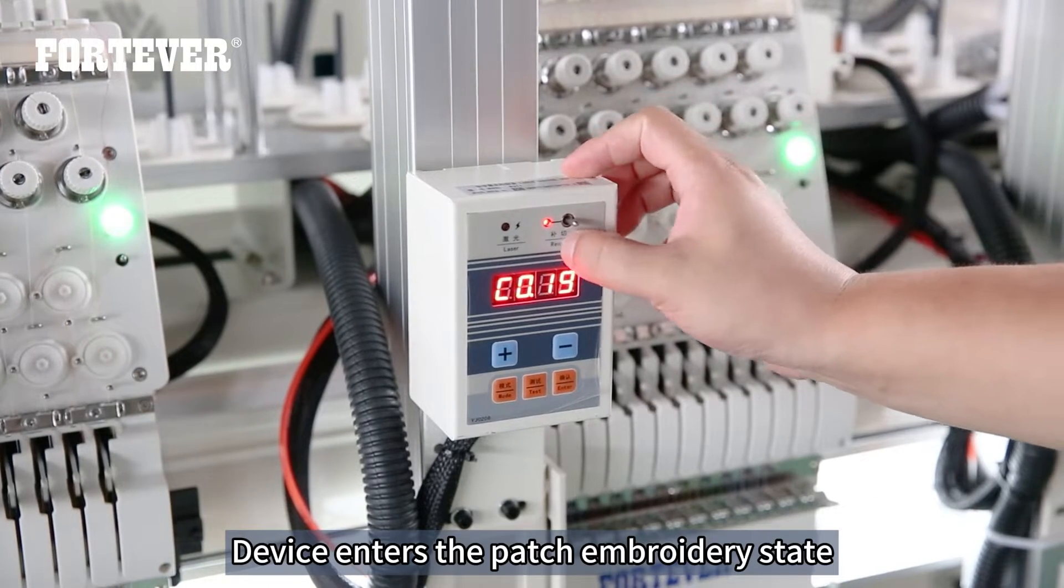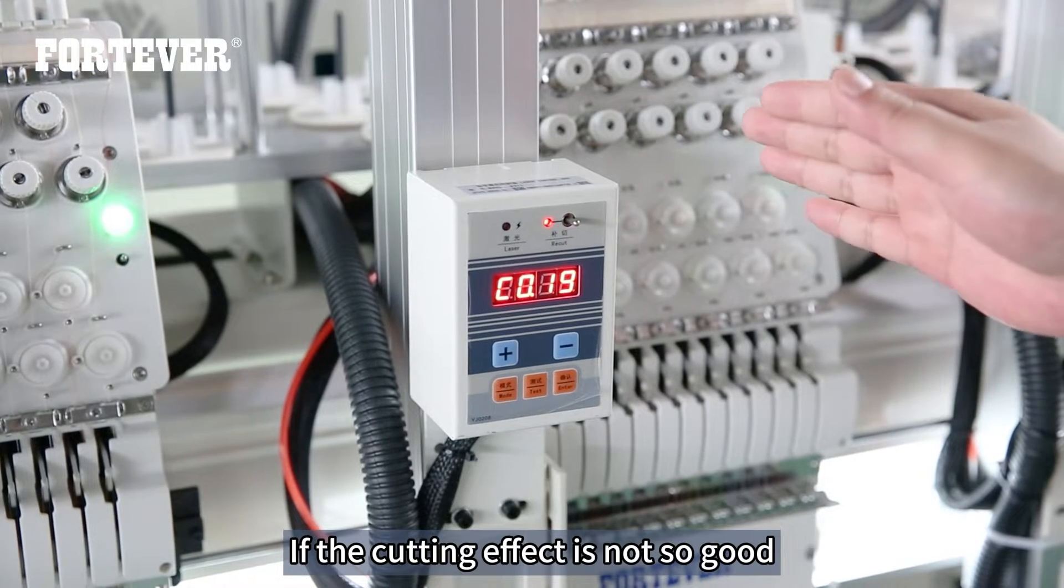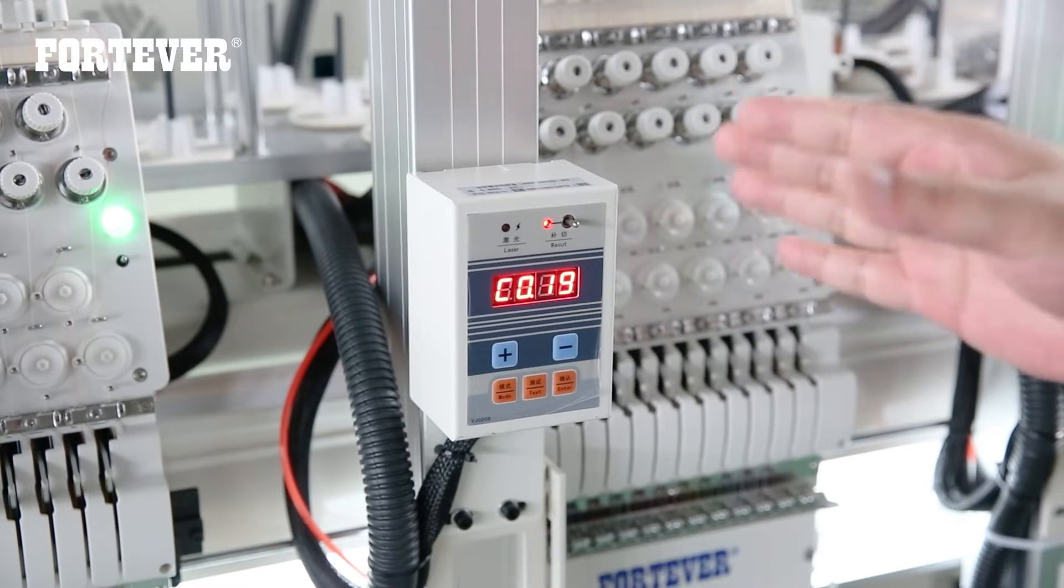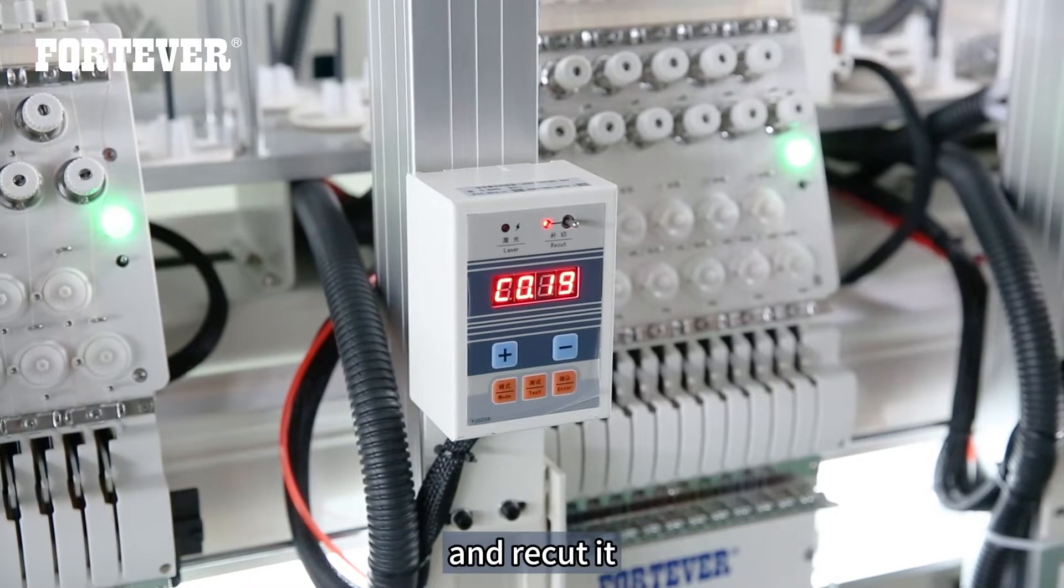Device enters the patch embroidery state if the cutting effect is not so good. We can push the switch to the top and we cut it.